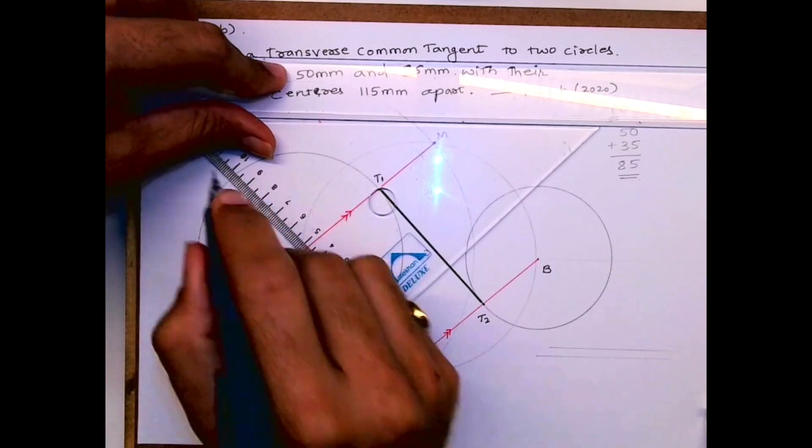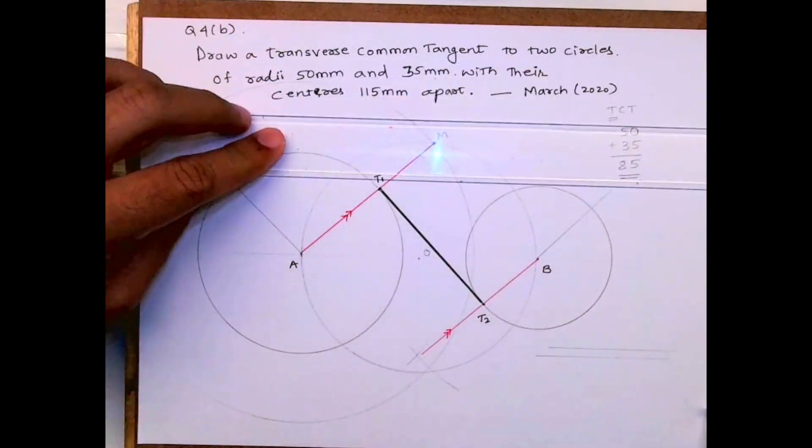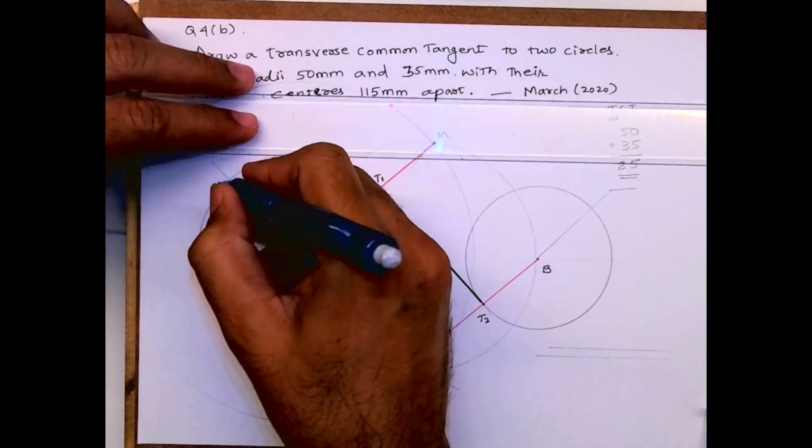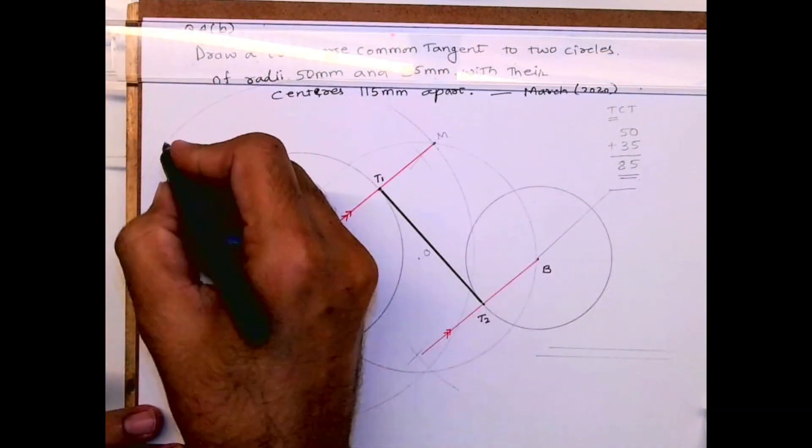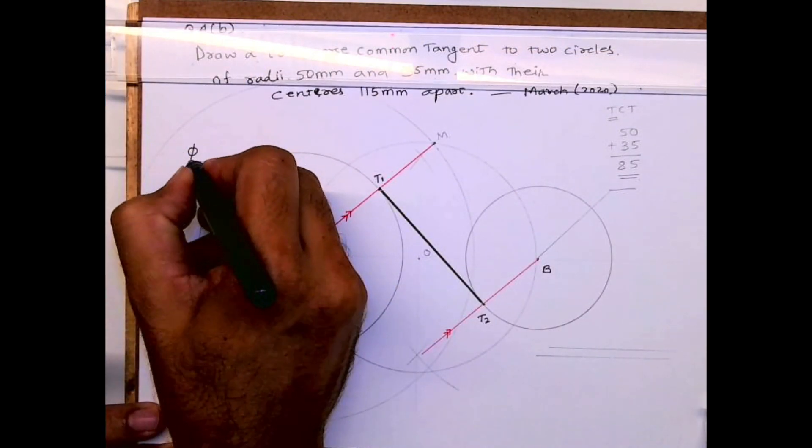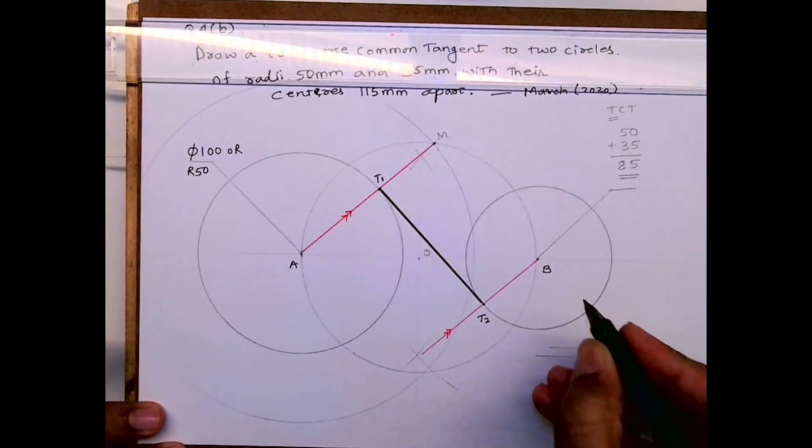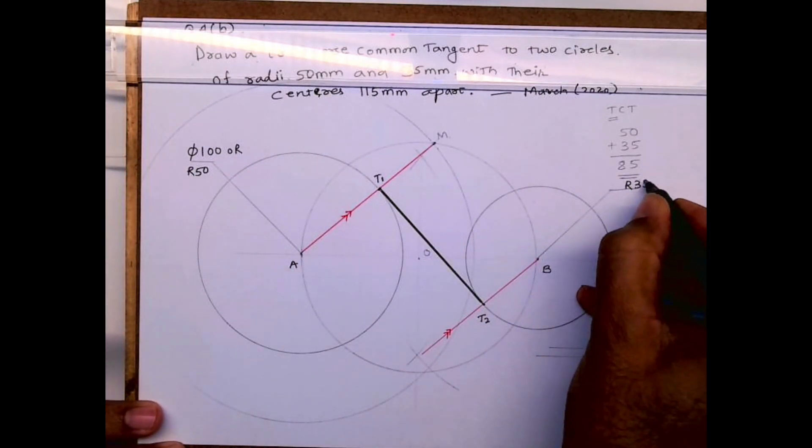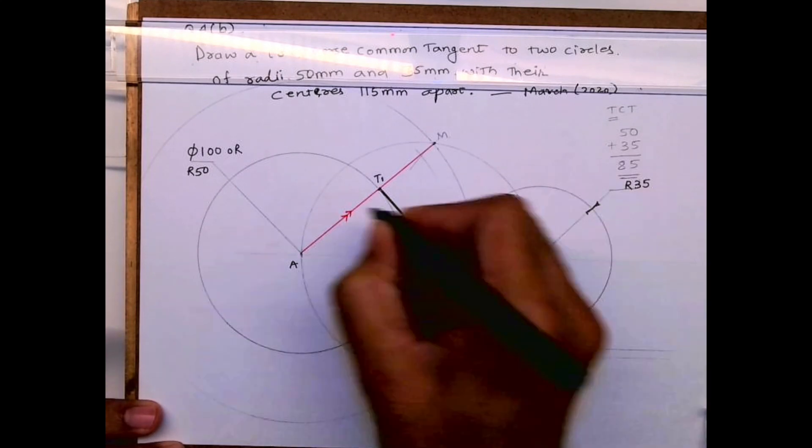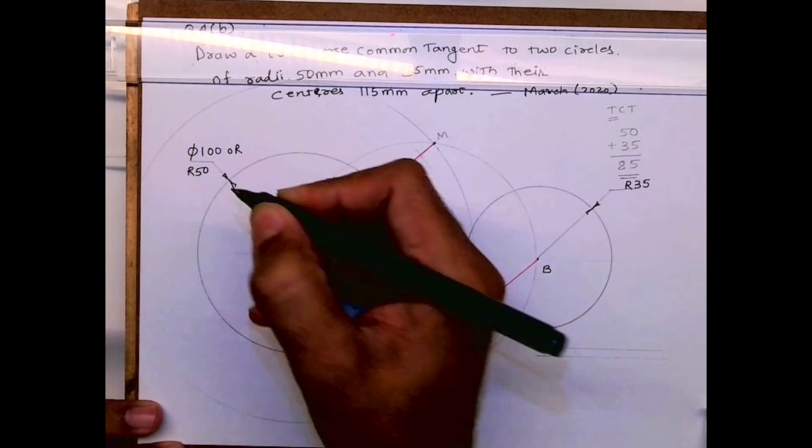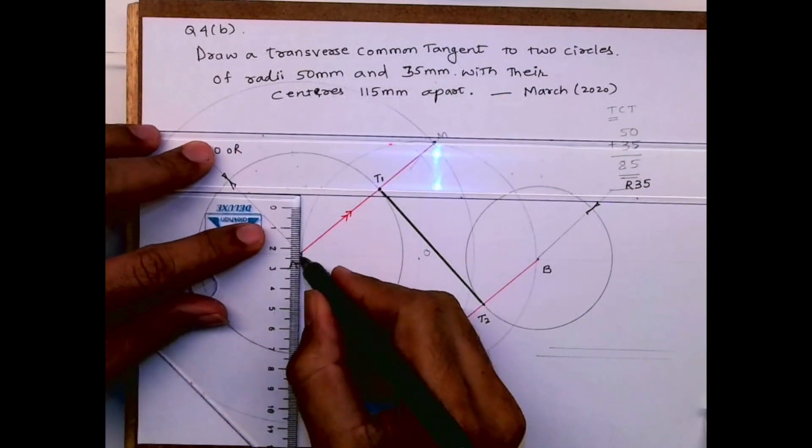You can do dimensioning. So you can write diameter 100 or radius 50, whatever you like. Your radius 35. And the distance from A to B is 115.